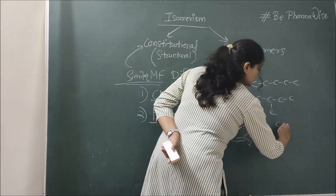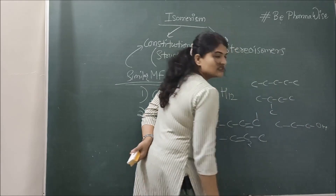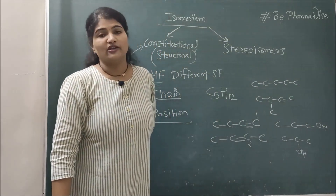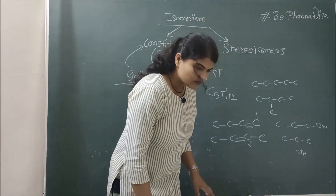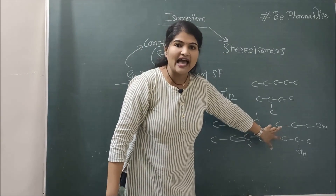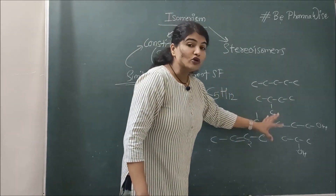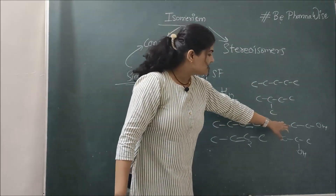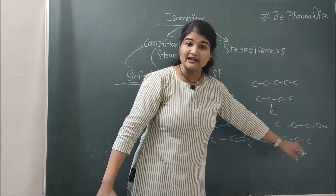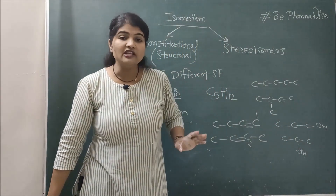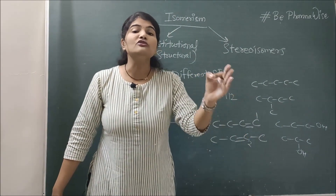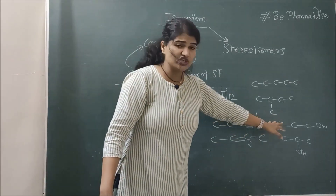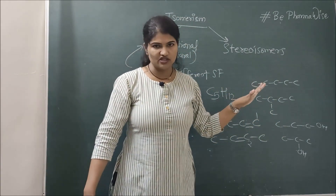Another example: 1-propanol has the OH group on the first carbon, and 2-propanol has the OH group on the second carbon. Both have similar molecular formula and the same functional group. The only difference is the position of the functional group. So what you remember in position isomerism is that the position of the functional group will be different — same molecular formula, different structural formulae, where the position of functional group differs.